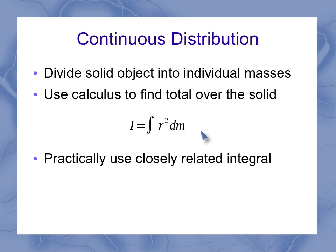Now practically speaking, trying to integrate over the mass is not quite as easy as integrating over some sort of geometric parameters. So instead, we represent this mass as being a combination of the density, rho, and the volume. So I can integrate over the density times the radius squared, integrated over the volume.